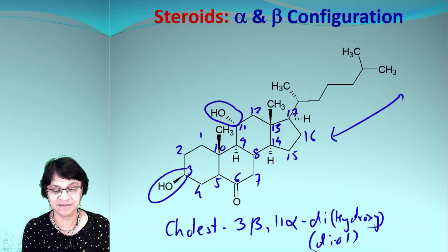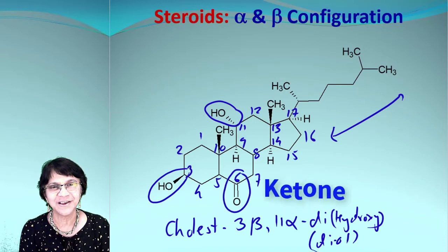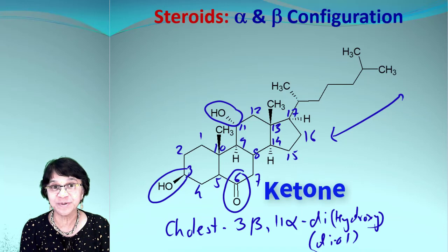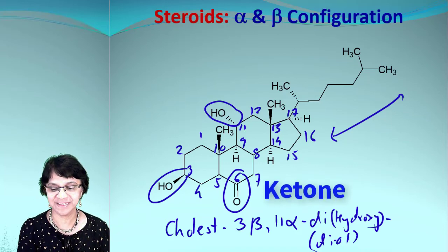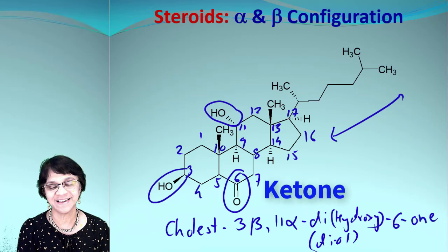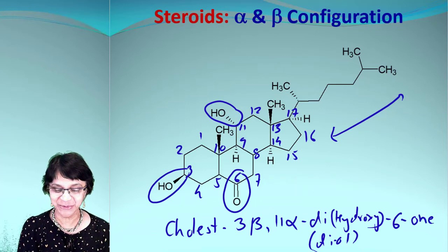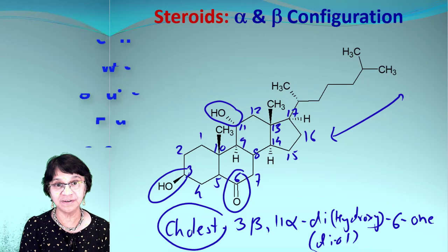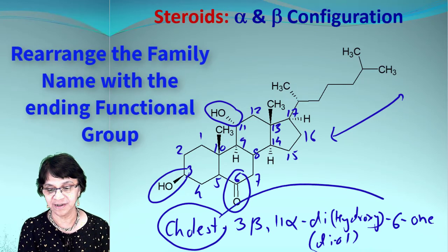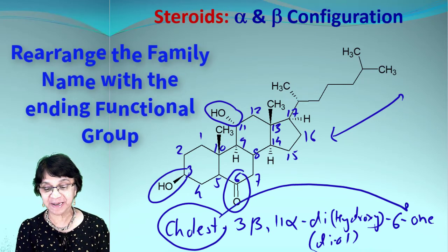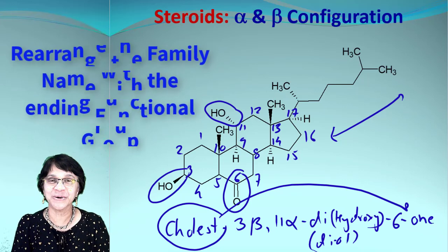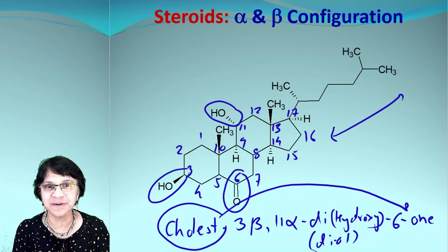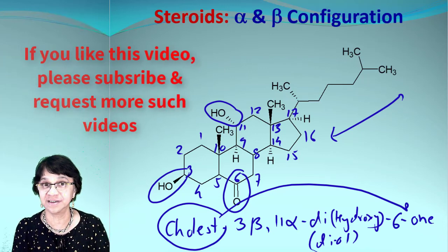And then the next thing which you're going to have is at position six we got a different group. Which group is that? That is the ketone, so that will be 6-one. It's a ketone. And you can also move this 'cholest' word right over here, so this becomes 'cholestone.' So what do you think? Now you know how to number any given steroid and also label alpha/beta and give the full name.